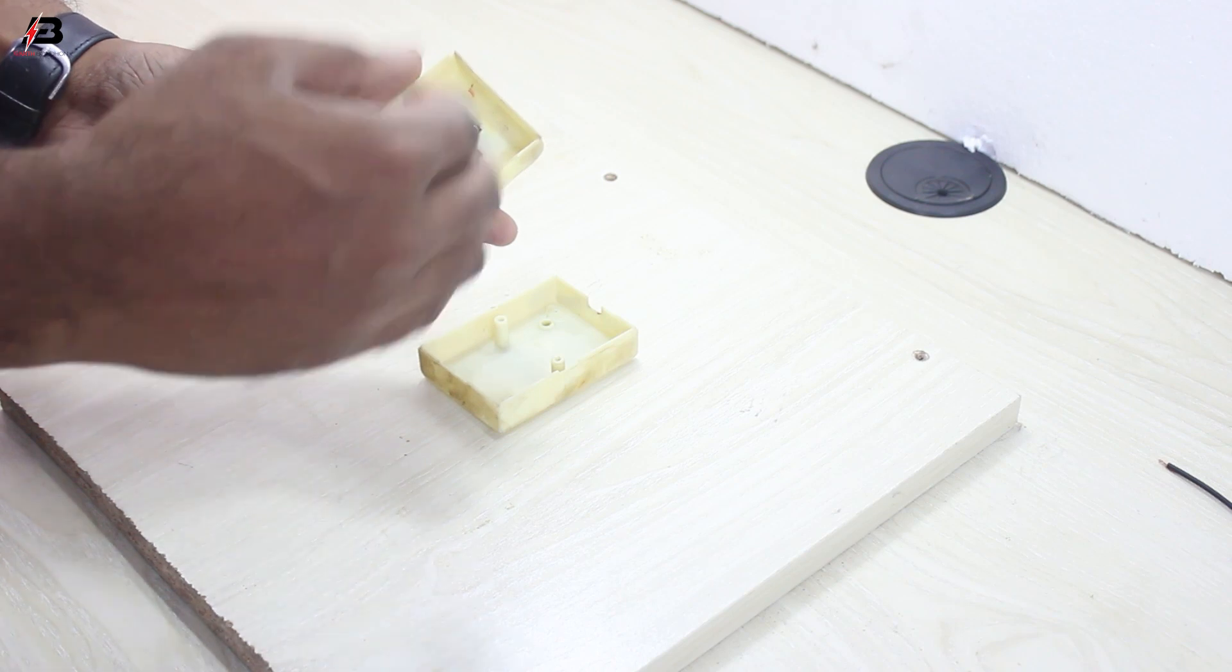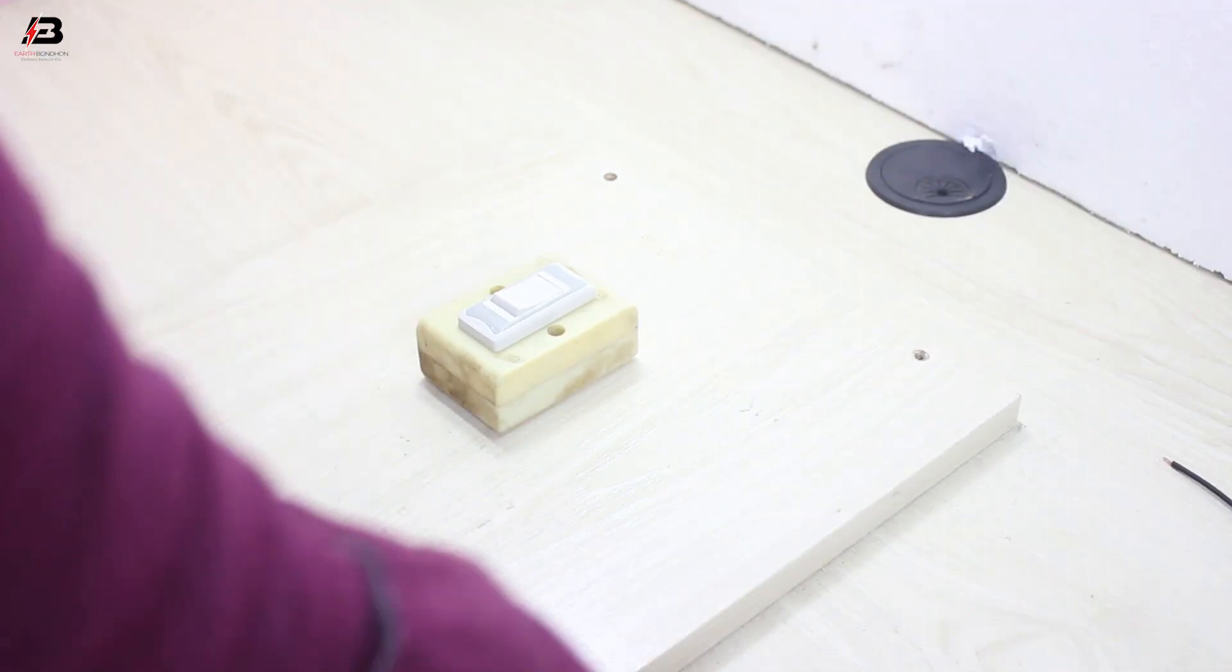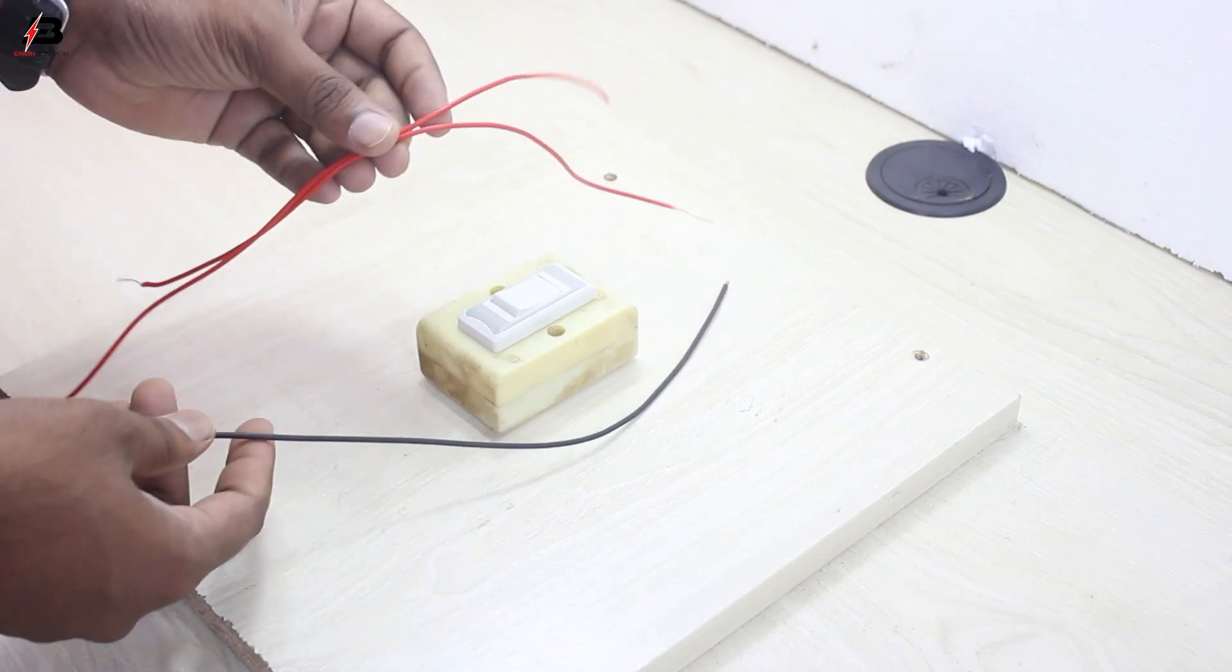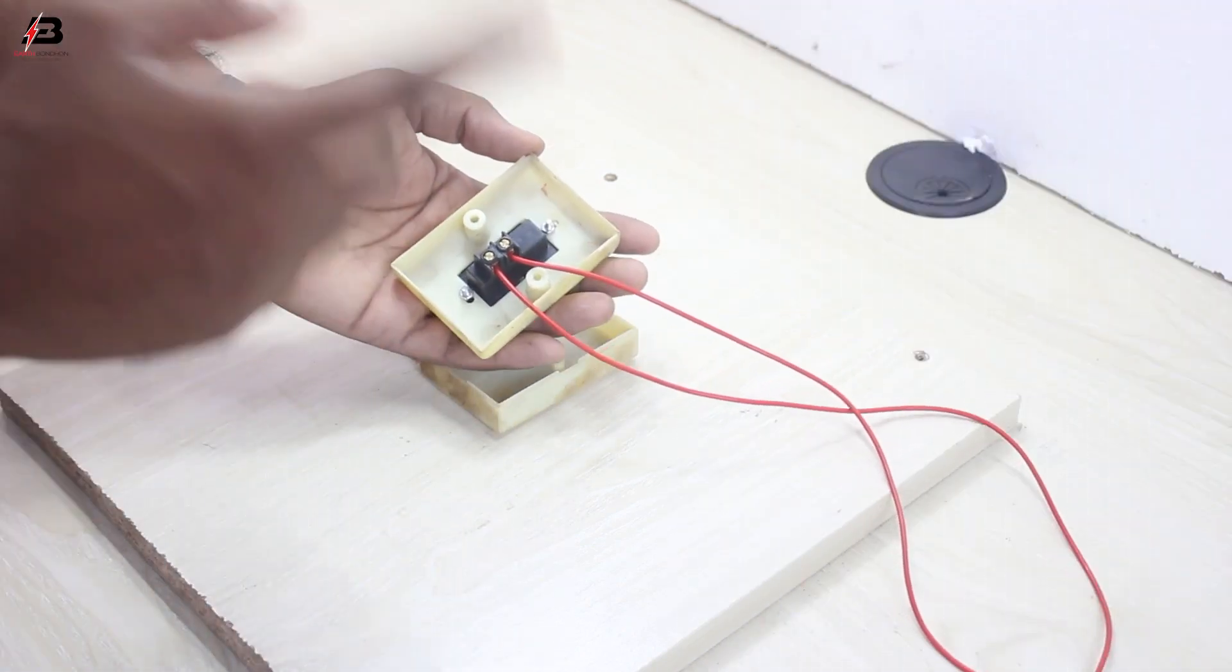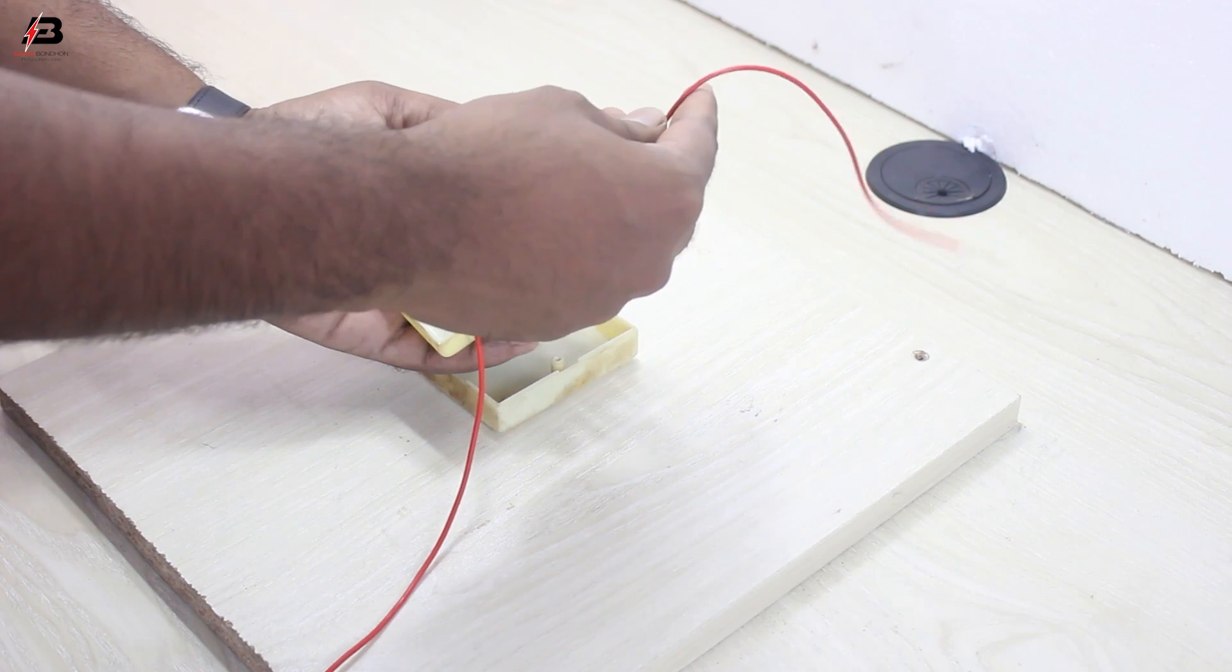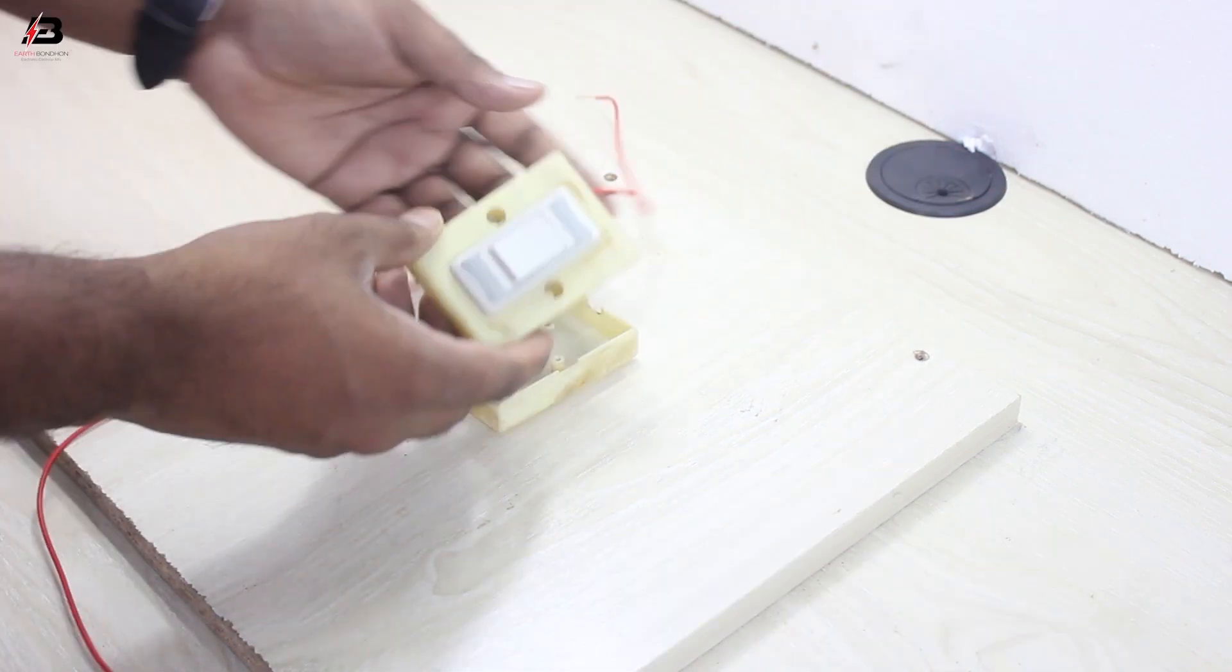Now our switch is okay. We'll connect the wires here—two red wires and a black wire for this diagram. Here we have two wires: one for source and one for load, meaning that's for the fan. Now we connect to the board.